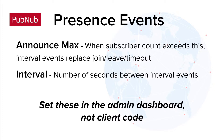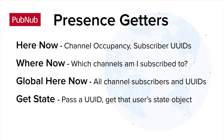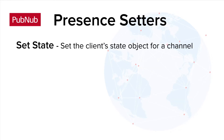Both the announce max and interval time frequency values are set for an entire keyset in the PubNum admin dashboard, not in client code. There are four accessor methods for presence in the client SDKs that allow the developer to programmatically ask for subscriber details like channel members and their state objects. The one mutator is the set state method, which you can pass a JavaScript object to. Remember that setting a user's state will fire a set state event for all subscribed clients.